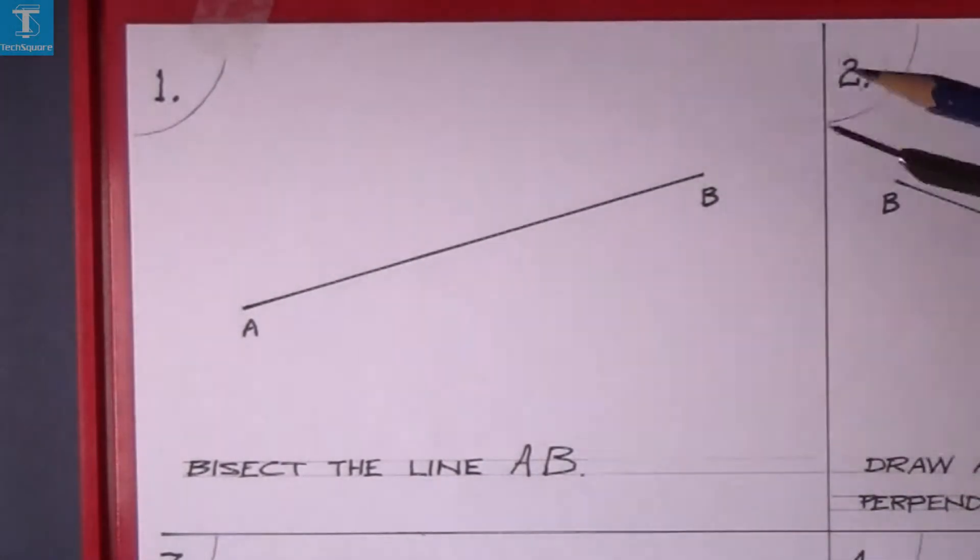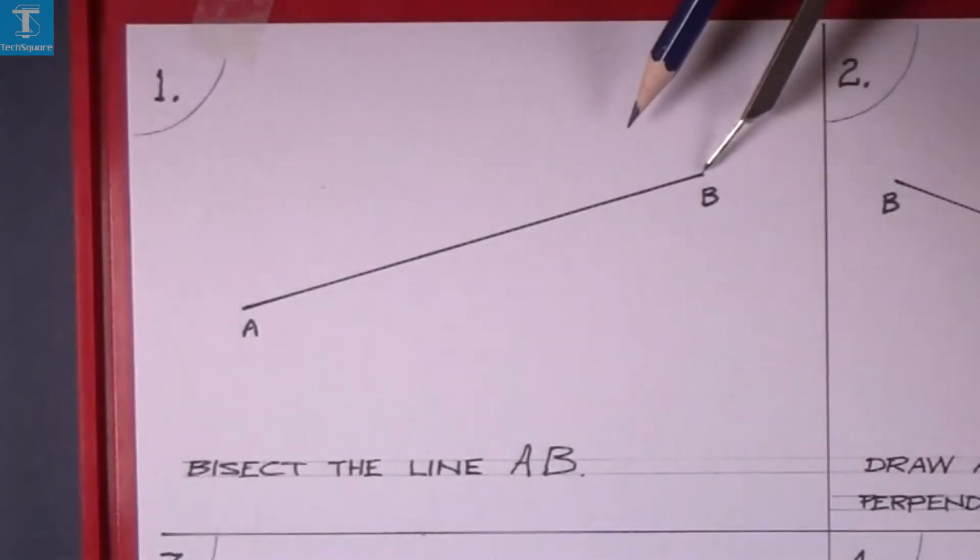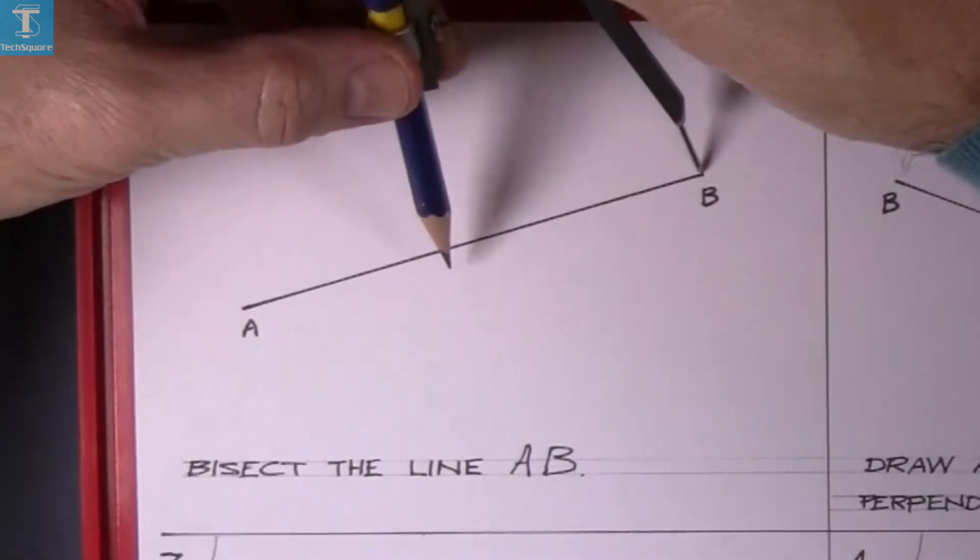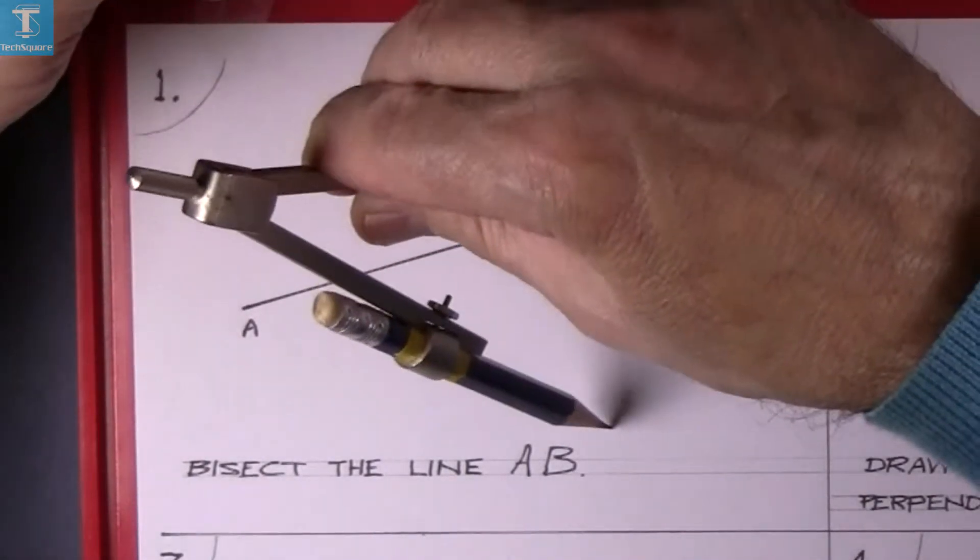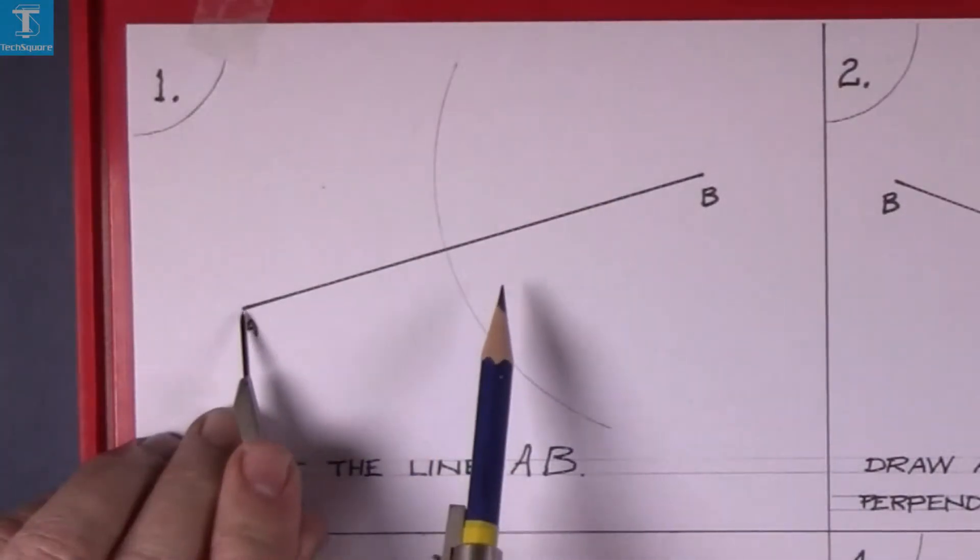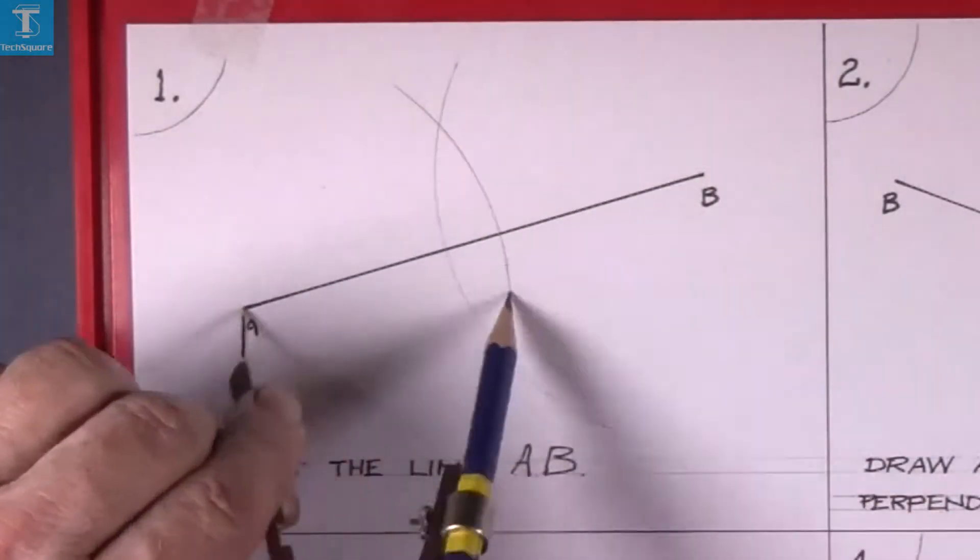We have to get the compass and set it to more than half of the line. So extend out the compass past halfway and draw an arc, and do the same on the other end. Put the point of compass in A and draw an arc.